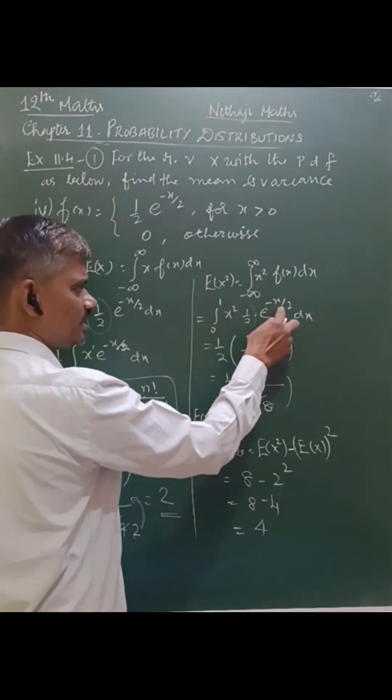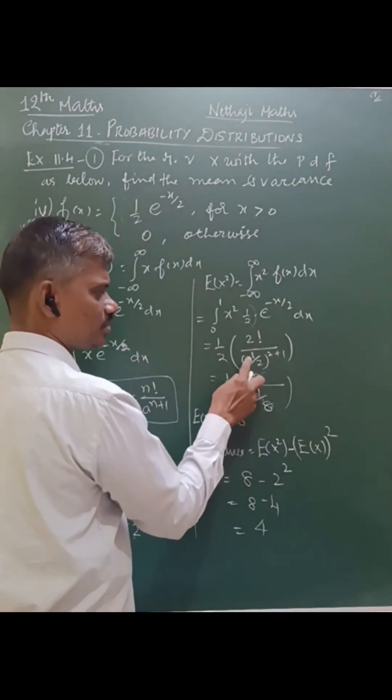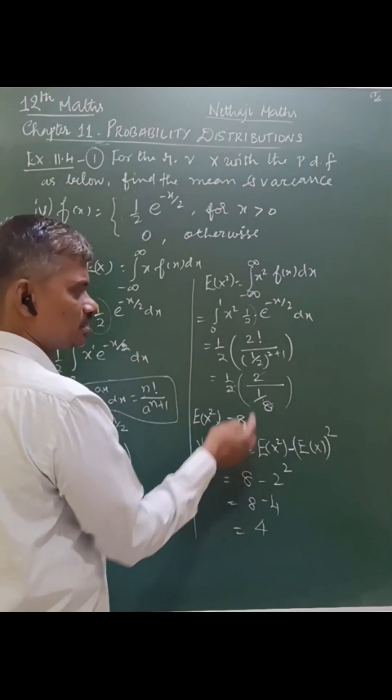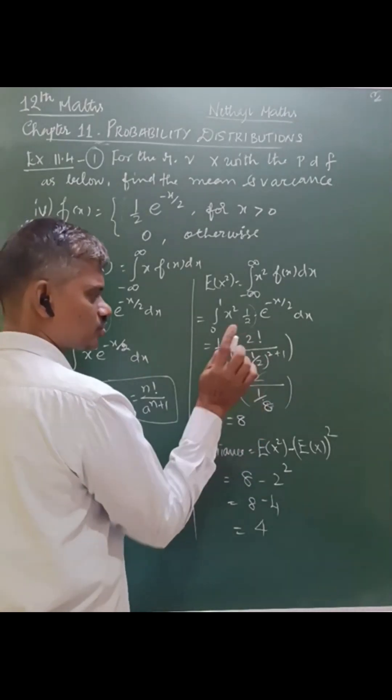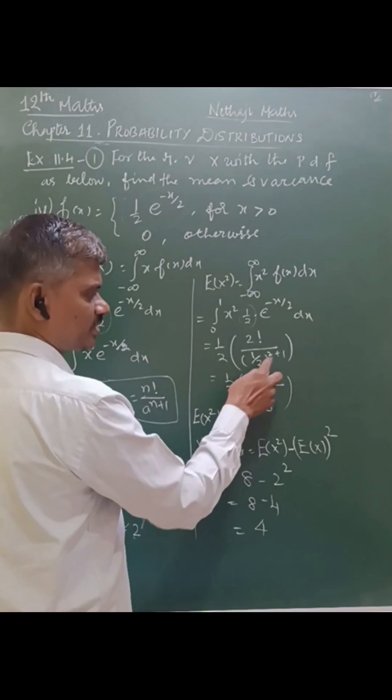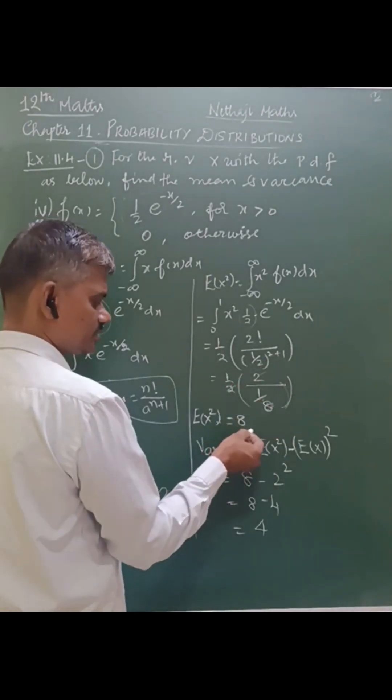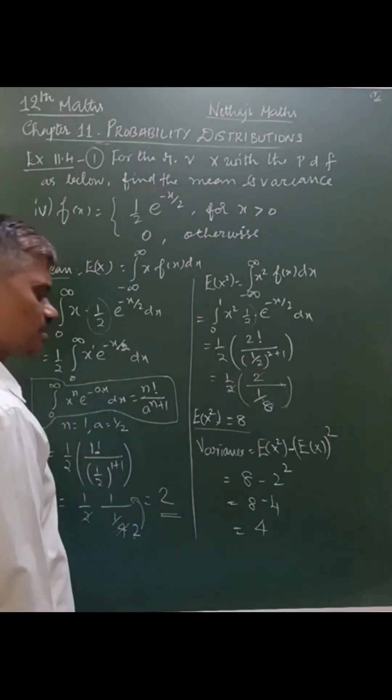n is greater than 2, a is greater than one-half. So 2 factorial by one-half power 2 plus 1, that is one-eighth. 2 factorial is 2, so one-half cube, that is one-eighth. The 8s cancel. This is the value of E(x squared).